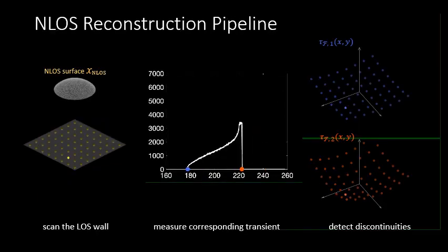Our pipeline for non-line-of-sight reconstruction is based on this observation and it works as follows. First, we scan the virtual source on many different locations on the line-of-sight wall. Second, at each one of these locations, we measure a transient.